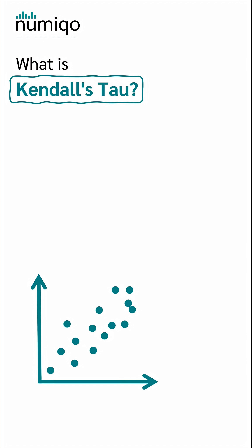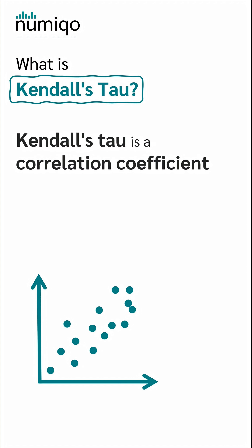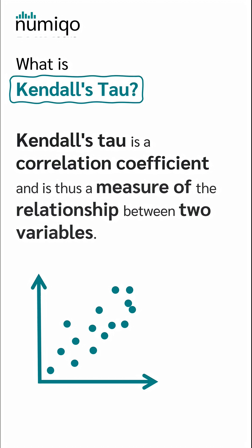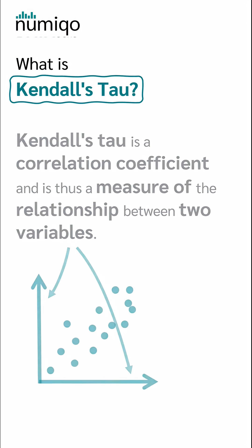What is Kendall's Tau? Kendall's Tau is a correlation coefficient and is thus a measure of the relationship between two variables.